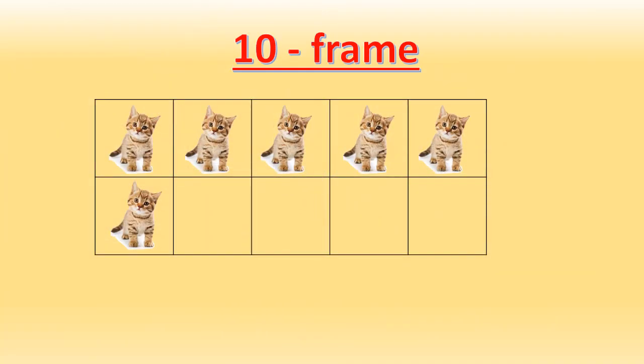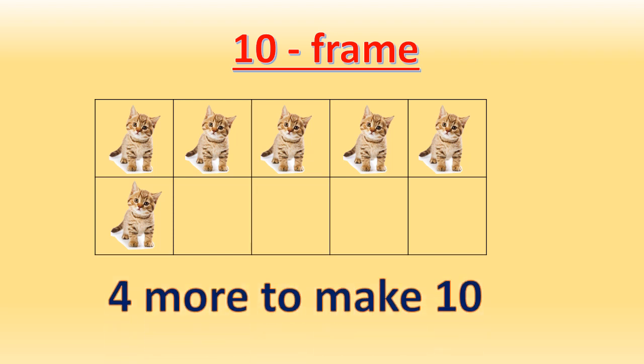How many cats are there? Good, 6 cats. How can we make it as 10? We should add or take away. Very good, we should add. Here you can also see the empty boxes, so we have to add more. There are 4 empty boxes, so we have to add 4 more. We can say 4 more to make 10.